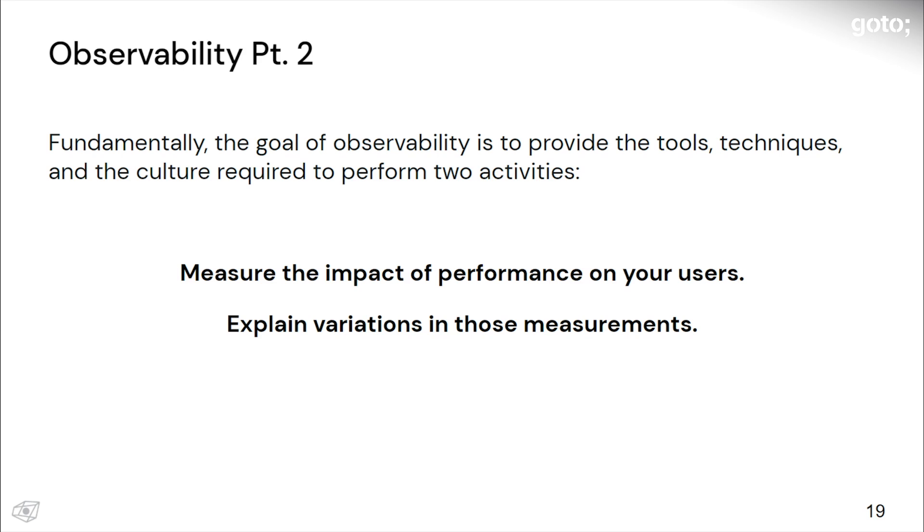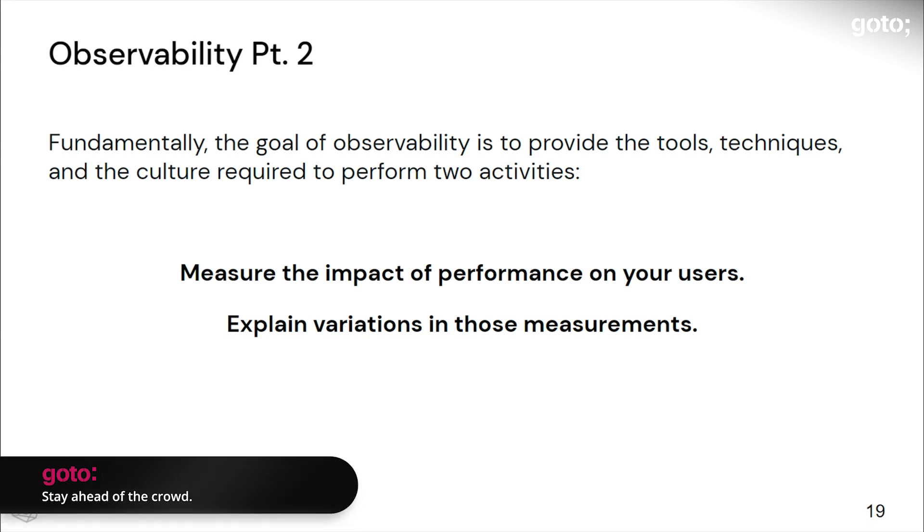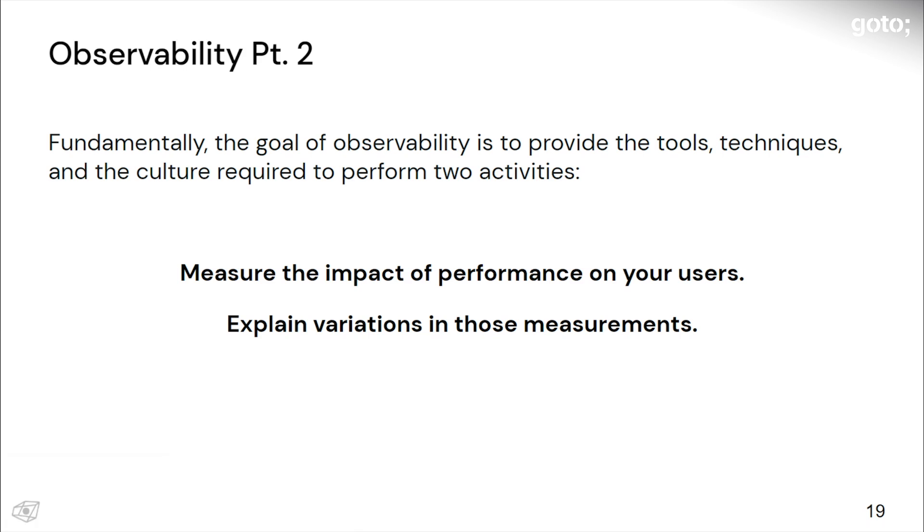If observability is about principles and practices around understanding your system, then the goal of it is to do that through these activities: measure the impact of performance on your users and then explain variations in the measurements you've taken. That leads to two goals, which are improving baseline performance and then addressing regressions in performance. Or we can shorten that to saying you want to improve an SLO—a service level objective—or you want to resolve a regression in an SLO.